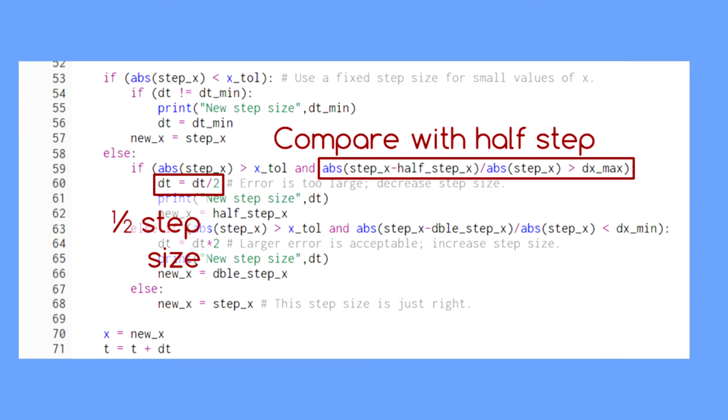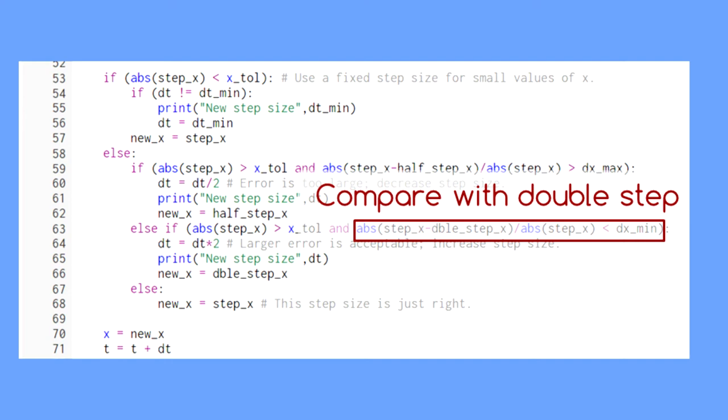In line 63, we compare the difference between the original step and the double step. If the relative difference between them is small enough, we double the step size and use the double step value.